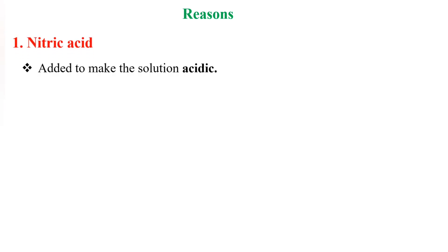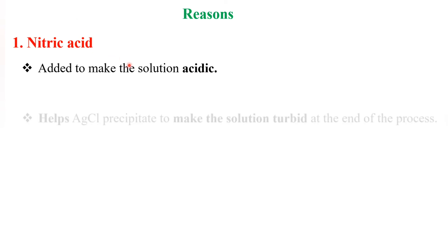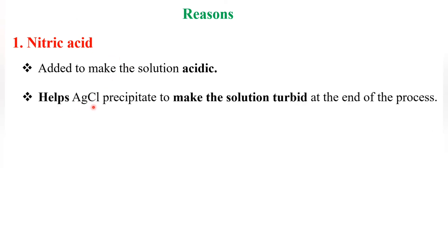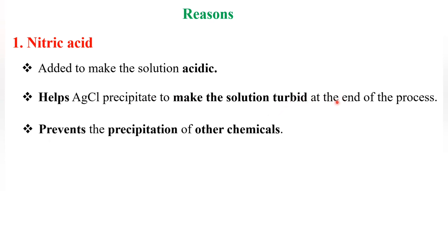Now we will see some reasons for adding chemicals. Nitric acid is added to make the solution acidic. It helps the silver chloride precipitate make the solution turbid at the end of the process. It also prevents the precipitation of other chemicals and provides a common ion effect.